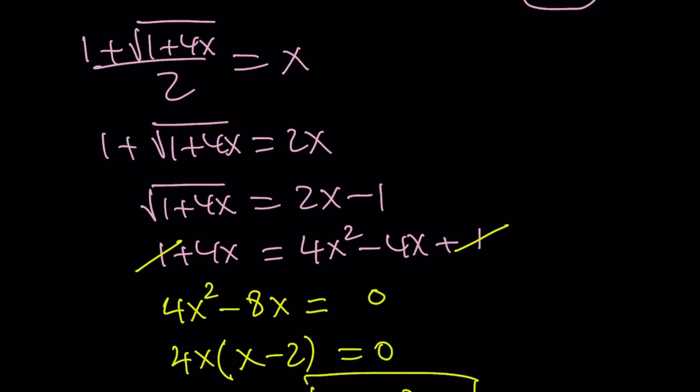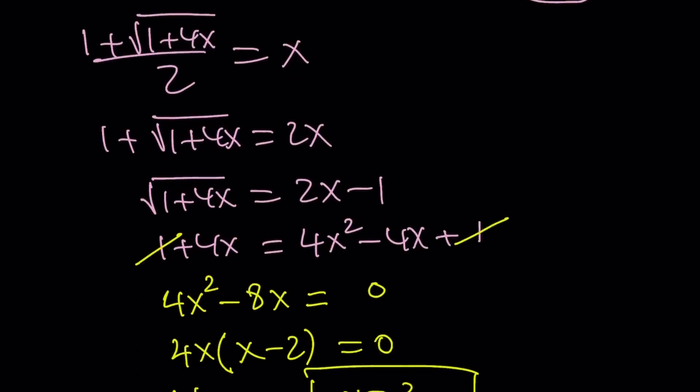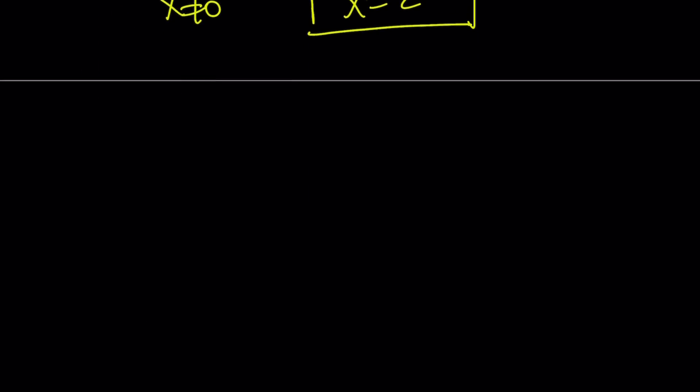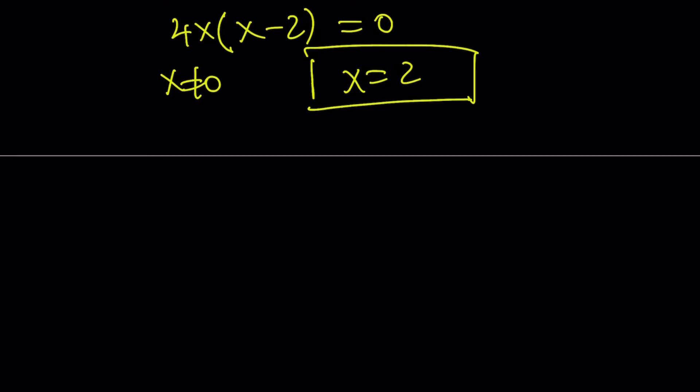Like, 4 times 2 plus 1 equals 9. And then, square root of 9 is 3. 1 plus 3 is 4. 4 by 2 equals 2. So, it works. You can also plug it into the original one, and you'll see that it works. Okay, great. So, x equals 2 is the answer. Let's go ahead and talk about the second method.